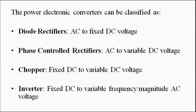Some basic power electronic converters are: diode rectifiers, which convert fixed AC to fixed DC voltage (half wave rectifier, full wave rectifier - bridge type or center type); phase control rectifiers, which convert AC to variable DC voltage where the magnitude keeps changing but the direction is constant; and chopper circuits, which convert fixed DC to variable magnitude DC voltage.